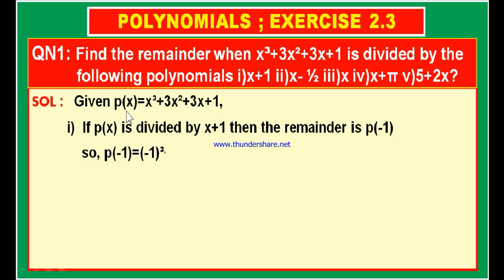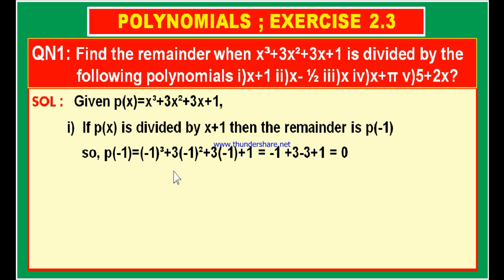p of minus 1 equals minus 1 whole cube plus 3 into minus 1 whole square plus 3 into minus 1 plus 1. Minus 1 whole cube is minus 1, minus 1 whole square is plus 1, giving plus 3, and 3 into minus 1 is minus 3. So we get: 3 minus 3 equals 0, and minus 1 plus 1 equals 0. Therefore, the final remainder when the given polynomial is divided by x plus 1 is 0.